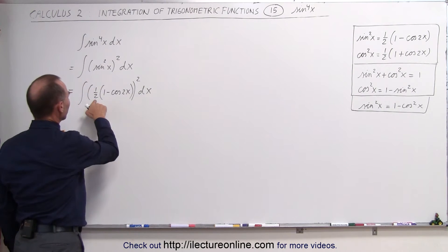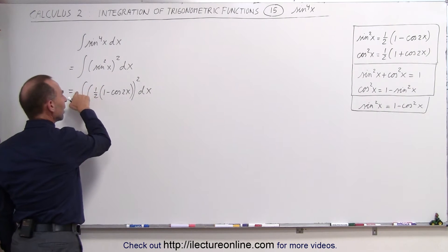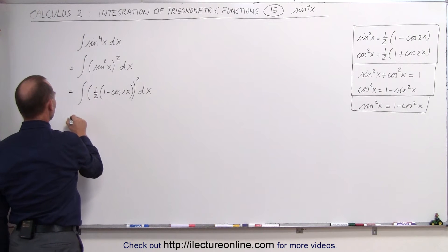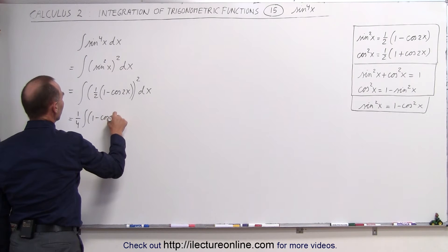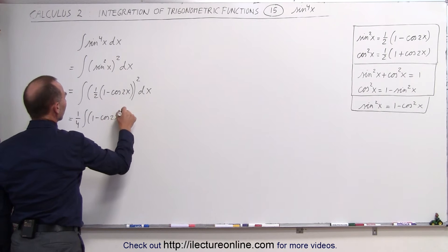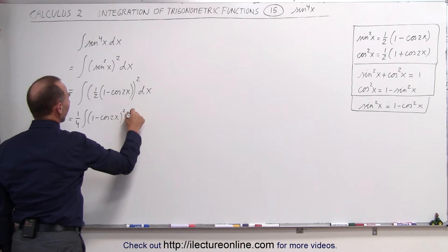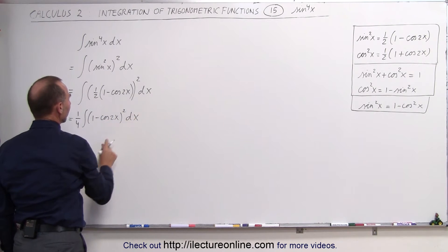We can square the one half and take it to the outside. So this is equal to one fourth times the integral of 1 minus the cosine of 2x, squared, times dx.